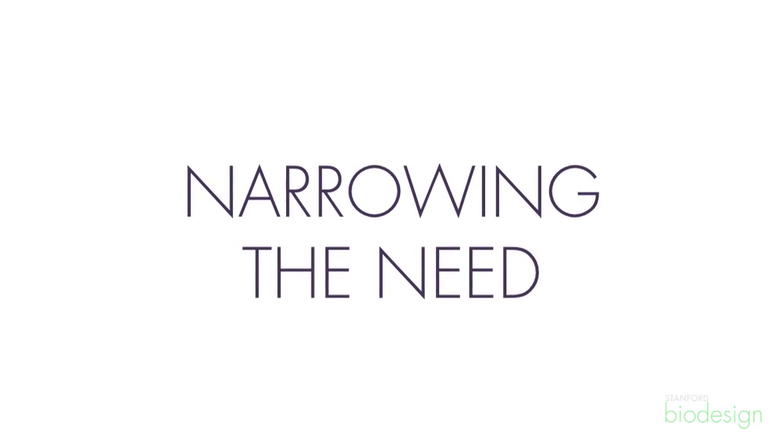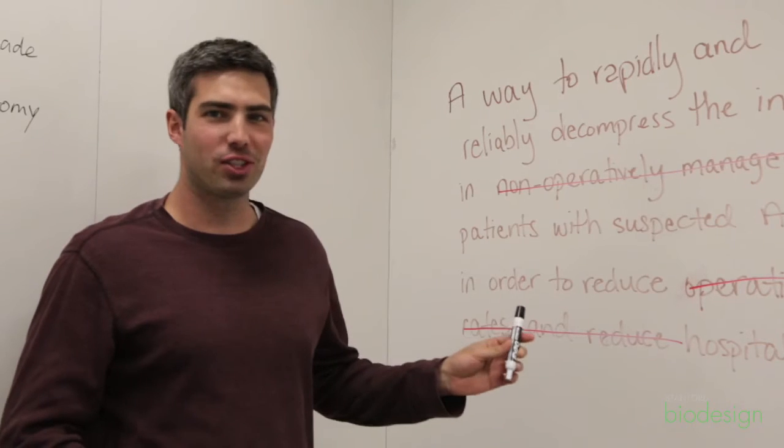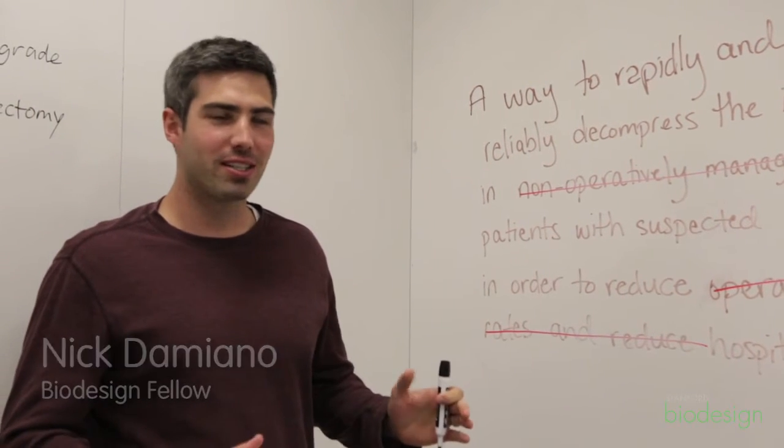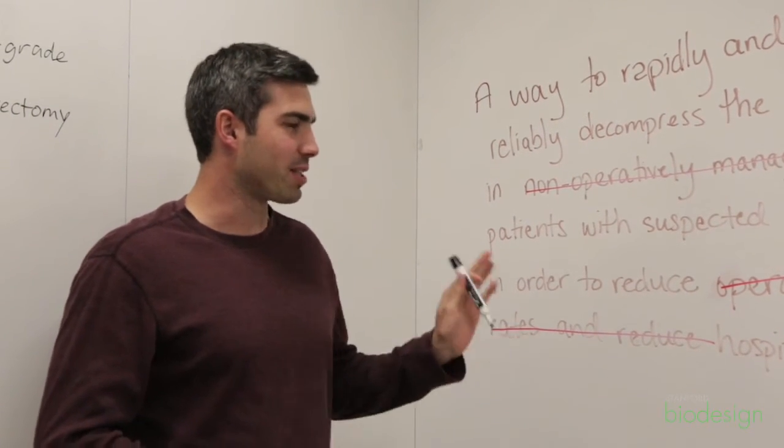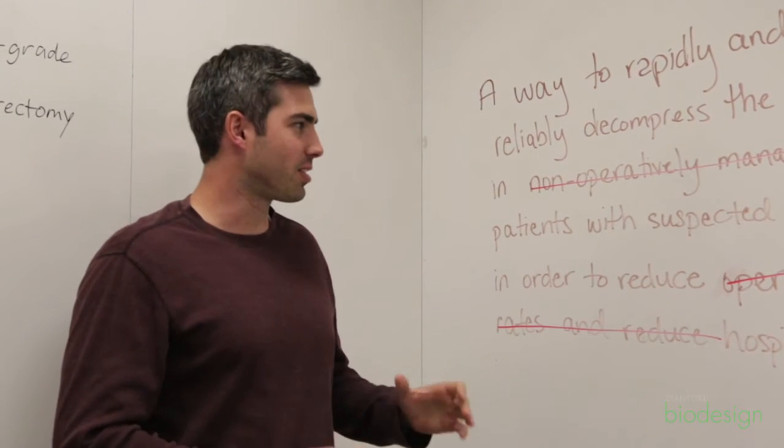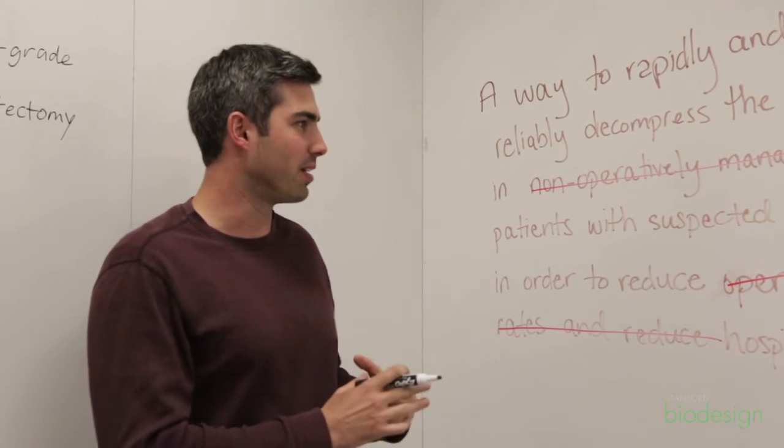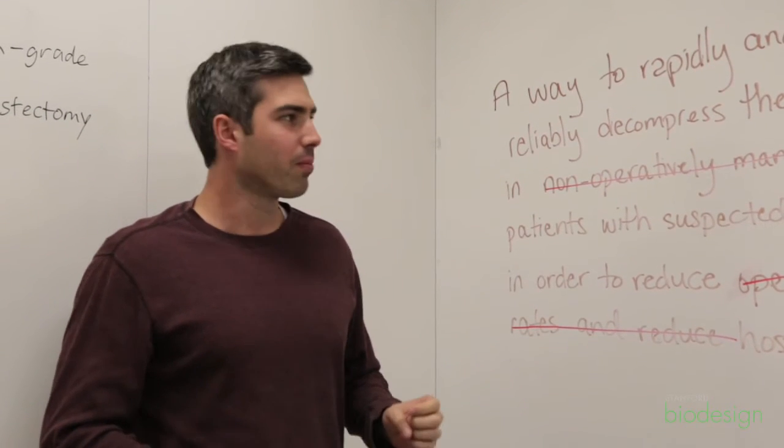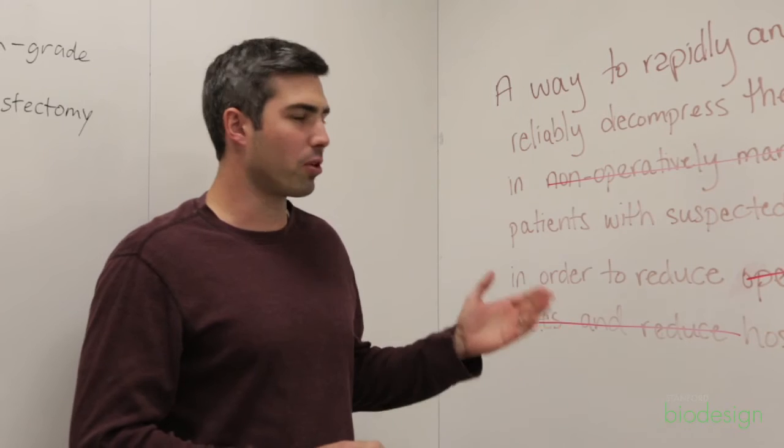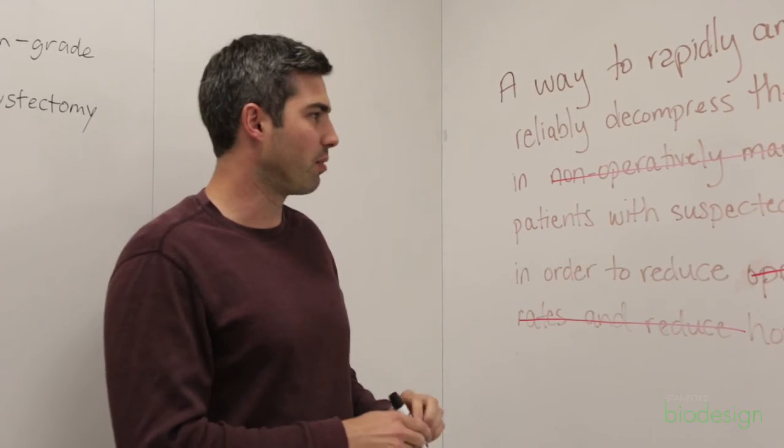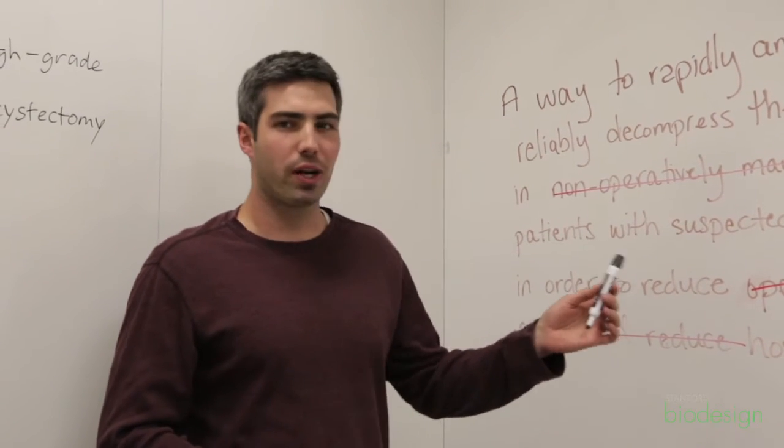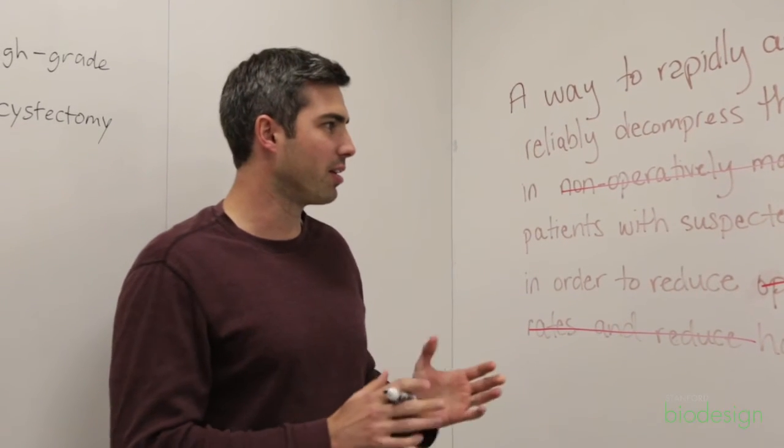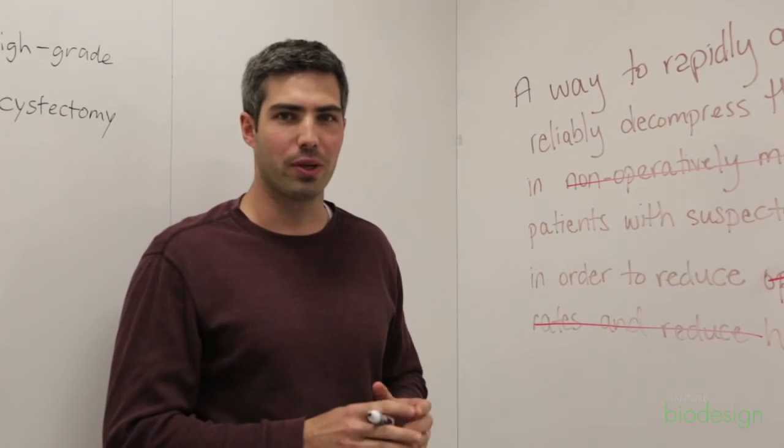One way we can scope this need statement down is to not just focus on patients with suspected adhesive small bowel obstruction, but actually patients that have had prior ASBOs, because that's a subset of patients that have suspected ASBOs. The effect of that would be potentially knowing with more certainty that the patient suffered from the condition we're trying to treat. However, we might be excluding patients that could broaden the scope of our treatment.